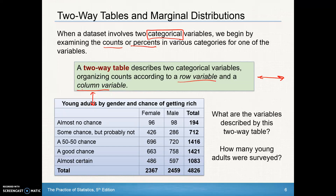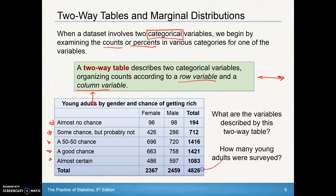Below here we have a two-way table about young adults by gender and chance of getting rich. The variables described by this two-way table include almost no chance, some chance but probably not, a 50-50 chance, etc. The two-way table deals with females and males and the counts in each of those different categories. To find how many young adults were totally surveyed, we look at that number in the bottom right corner — that's our grand total.